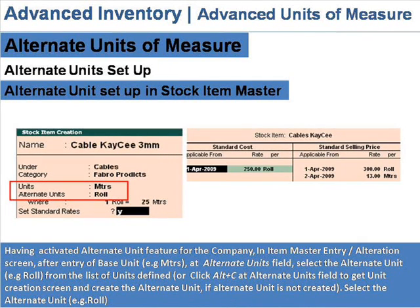Alternate unit setup in stock item master: having activated the alternate unit feature for the company, in the item master entry or alteration screen, after entering the base unit, go to the Alternate Units field and select the alternate unit — for example, Roll — from the list of defined units, or click Alt+C at the Alternate Unit field to open the unit creation screen and create the alternate unit if it has not been created yet.